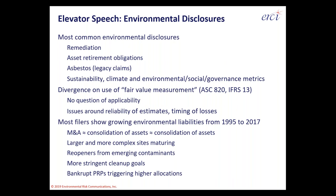Additionally, larger and more complex sites are maturing. Reopeners are coming from emerging contaminants like 1,4-dioxane, PFOA, and PFAS — the flame-retardant chemicals — along with more stringent cleanup goals as the science continues to improve. Periodically, bankrupt PRPs also trigger higher allocations in multi-party sites, meaning the same lifecycle costs get split among fewer parties, so liabilities appear to be going up when they may actually be fairly stable.